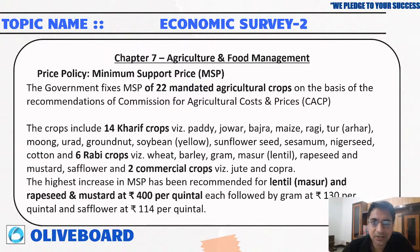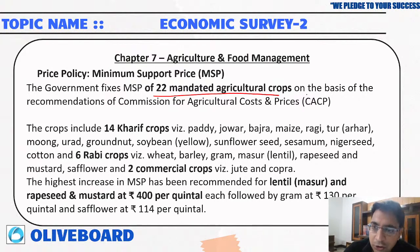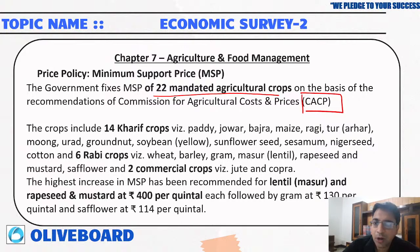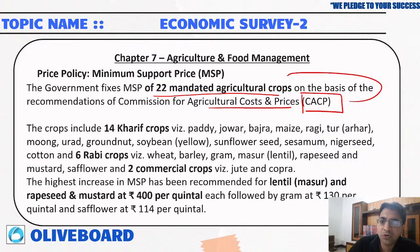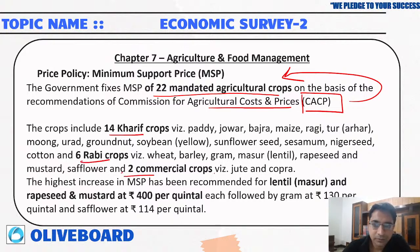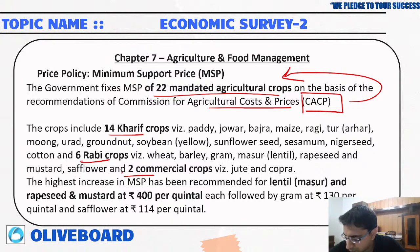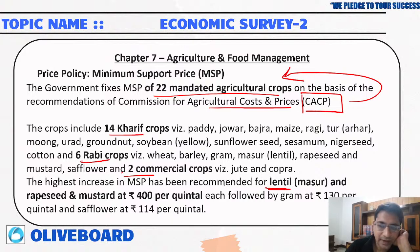Minimum support prices cover 22 mandated agricultural crops — 14 Kharif crops, 6 Rabi crops, and 2 commercial crops. MSP recommendations are given by the Commission for Agricultural Costs and Prices, CACP — not the Ministry of Agriculture. The highest increase in MSP was recommended for lentils — masoor dal — and rapeseed and mustard at rupees 400 per quintal.